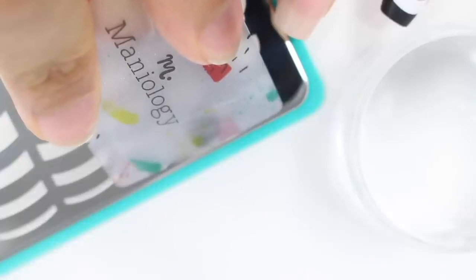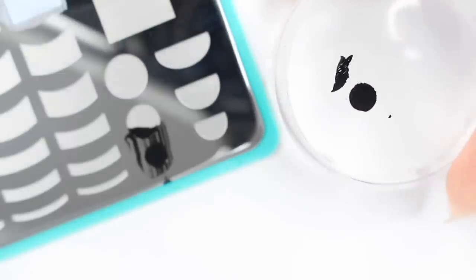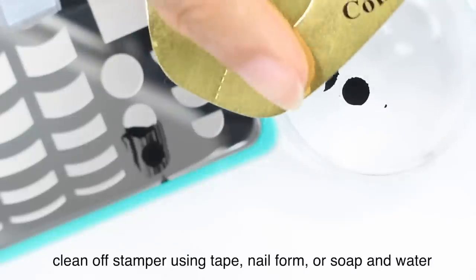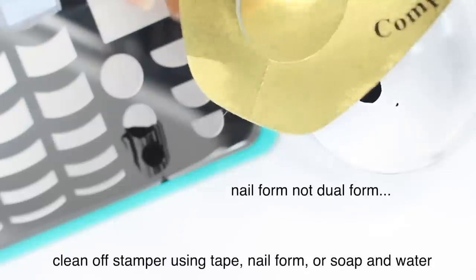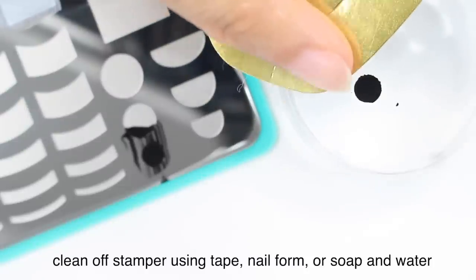So we're gonna move back to the other plate and try out some of those smaller shapes. And I did want to mention I realized I could use something sticky to clean off my stamper, especially if you only need one shape. So I pulled out a dual form because I had no tape, and it worked so well. So instead of rinsing the stamper off with soap and water every time, you can just use tape or a dual form or a sticker, whatever you want.